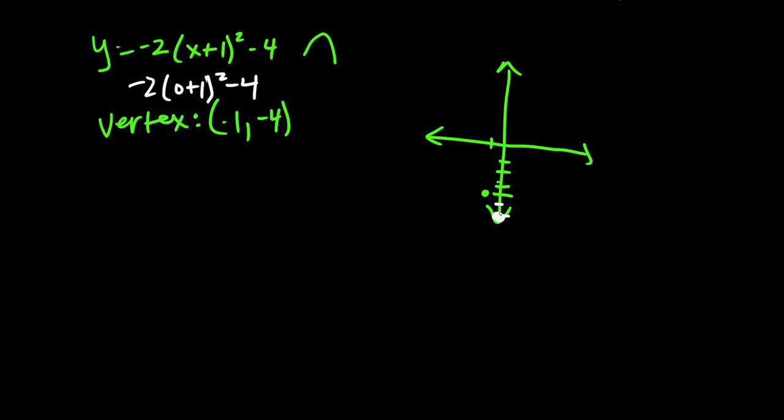So if we go down to negative 6, that's where the y-intercept is going to be. Now this time we're only one away from the vertex, so if we just go one over, we'll mirror that point. And then we connect the dots, and that's our parabola.